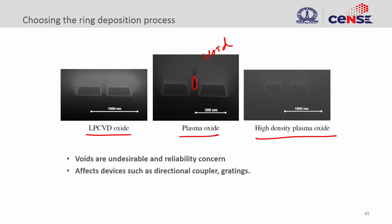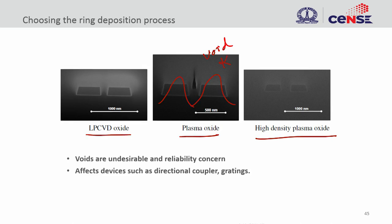These voids are undesirable for reliability reasons. For a directional coupler where light propagates between waveguides, the presence of a void changes the coupling coefficient kappa between the two waveguides. Any fabrication non-ideality is going to affect device performance.